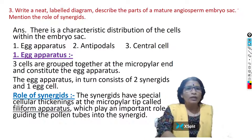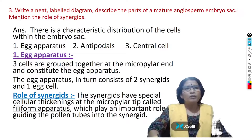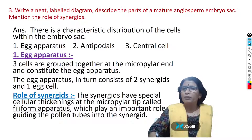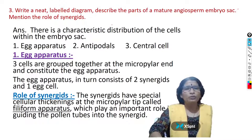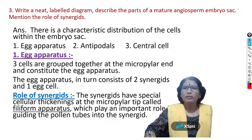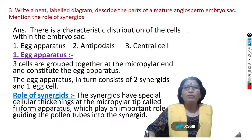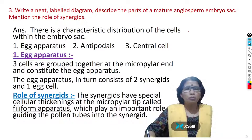The question is: Write a neat labeled diagram and describe the parts of a mature angiosperm embryo sac. Mention the role of synergids. This question has eight marks allotted. I will explain how those eight marks are distributed.